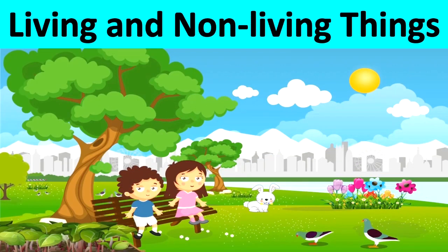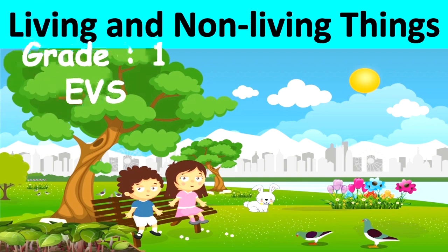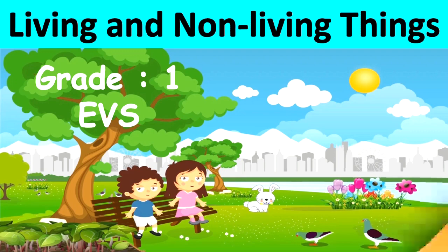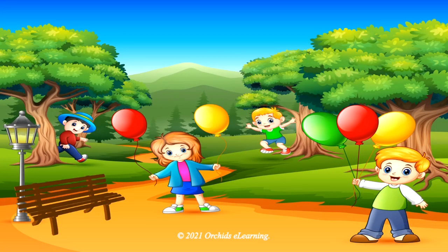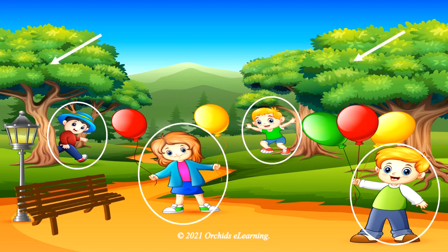Living and non-living things — Grade 1 EVS. There are many things around us. Look at the picture of a park. Circle any two things that will grow bigger and two things that cannot grow bigger. Things such as children and plants can grow bigger, but things such as a balloon and a bench cannot grow. Let us learn: things around us can be living things or non-living things.